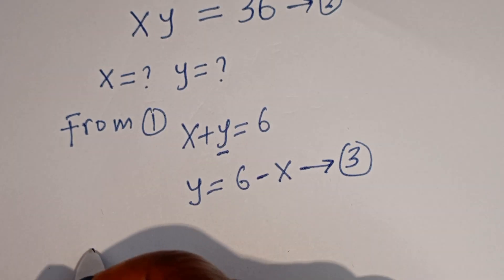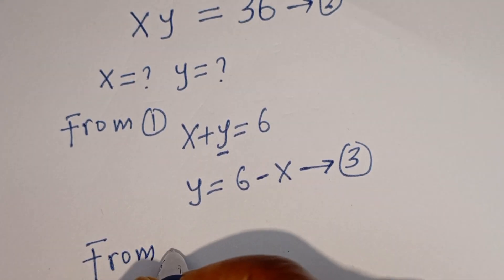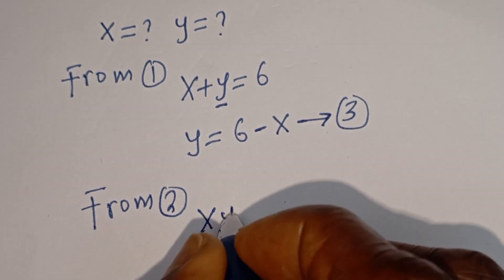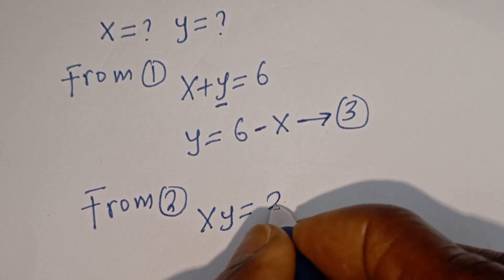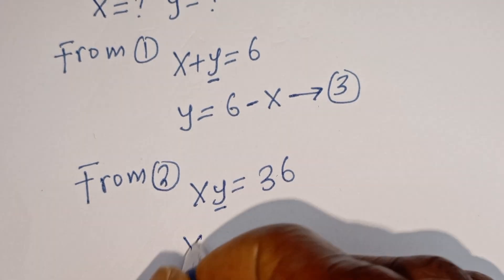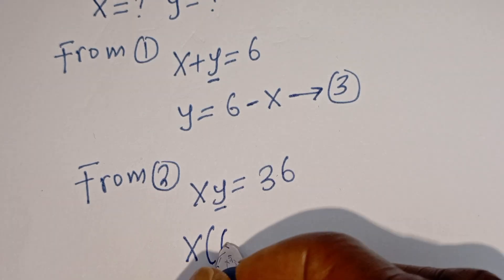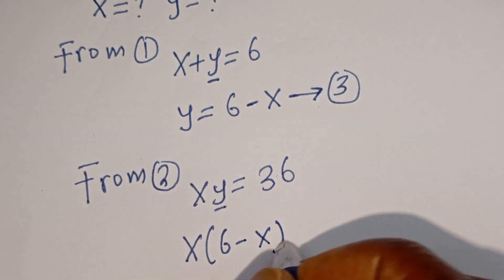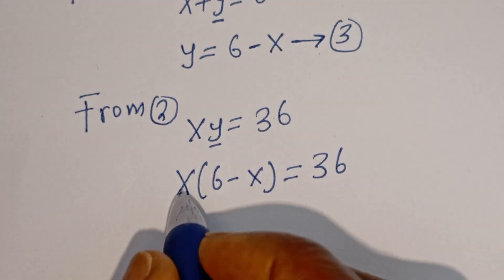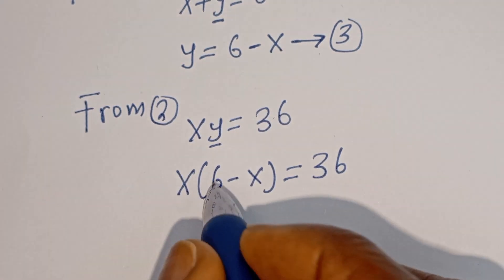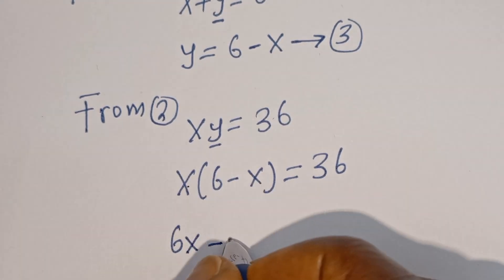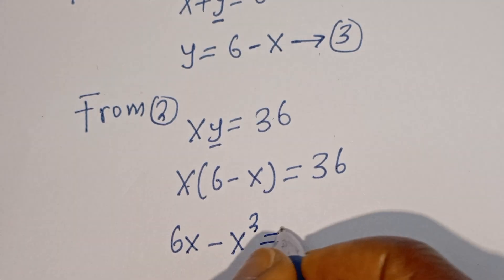From equation 2, that is s times y equal to 36, let's substitute for y. We have s multiplied by bracket 6 minus s, which is equal to 36. Let's multiply out: s times 6 is 6s, minus s times s is s squared, is equal to 36.